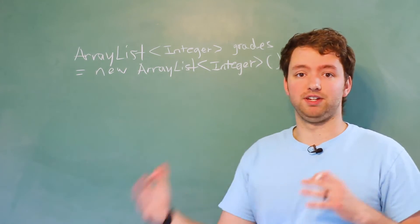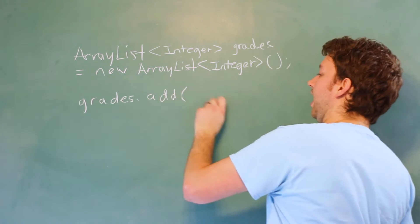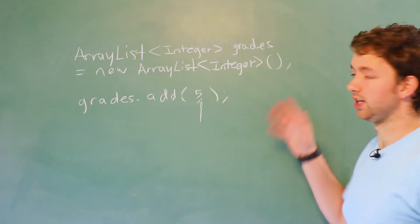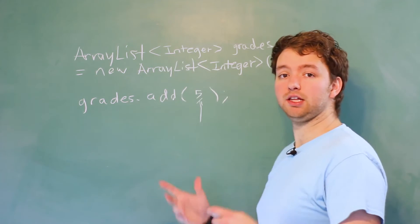And then to put stuff inside of this list, all you got to do is say grades.add, and then in parentheses, you can put the value such as five. That's going to push it onto the array list.